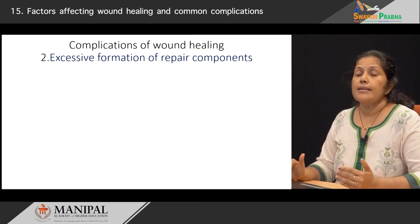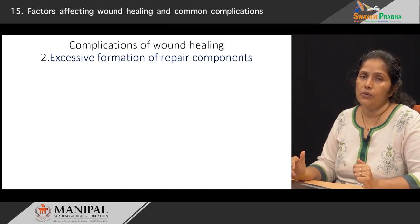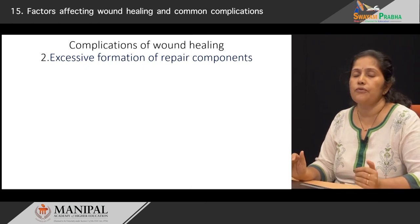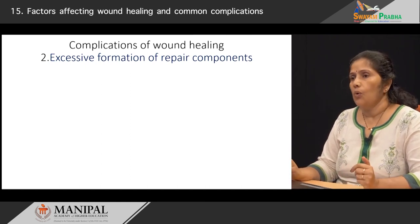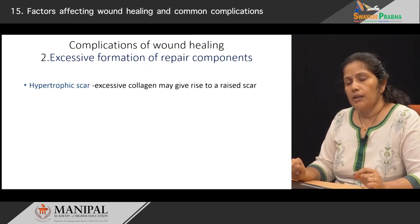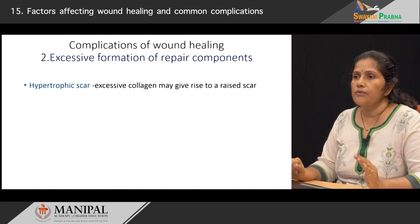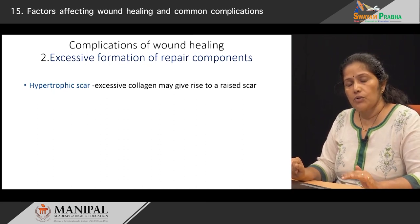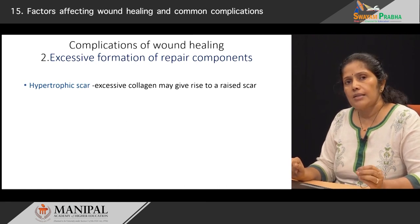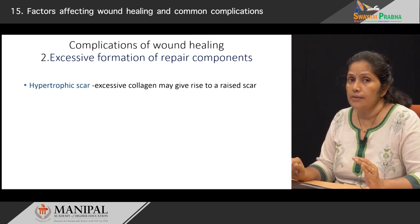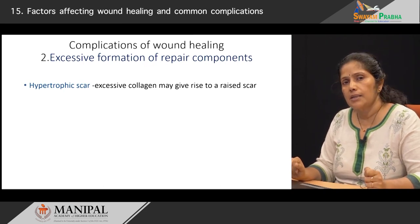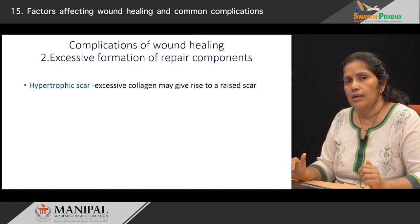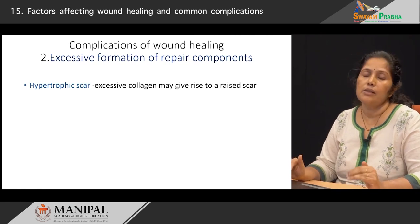Now, let us see what happens if there is excessive formation of the repair components. If there is excessive formation of granulation tissue, the first complication we can see is known as a hypertrophic scar. This is because of excessive collagen formation which gives rise to a raised scar. Such hypertrophic scars are very commonly seen in patients post-burns or thermal injury, where the injury is quite deep into the deeper dermis and the excess collagen tissue formation results in a scar which rises higher than the surrounding tissues.